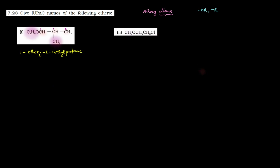Ab hum dekhenge next part — second part mein kya given hai? CH3-O-CH2-CH2-Cl. Yahan par substituents kaun kaun se honge? Ek hai CL aur ek hoga CH3 wala methoxy. Carbon atoms longest chain hai 1 aur 2 — do carbon atoms. First position par hai methoxy aur second position par hai chloro. Alphabetical order mein pehle chloro aayega, toh: 2-chloro-1-methoxyethane.